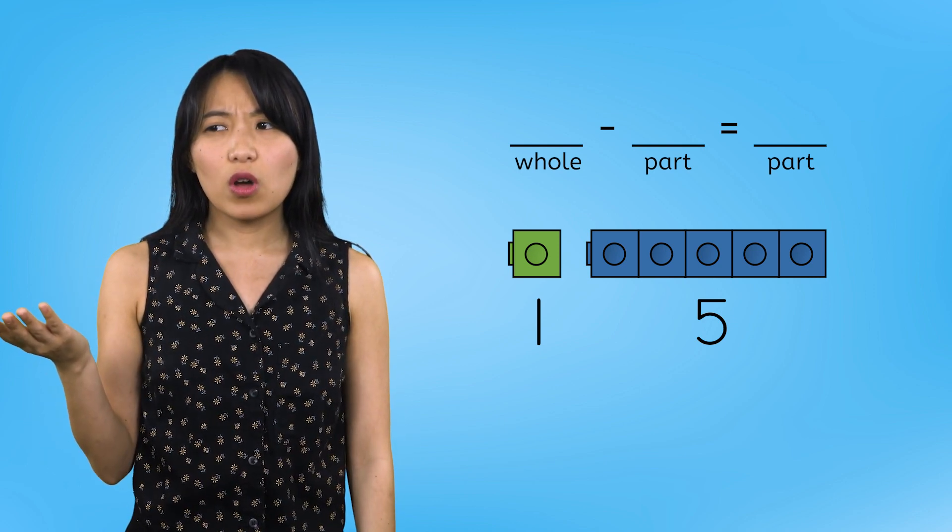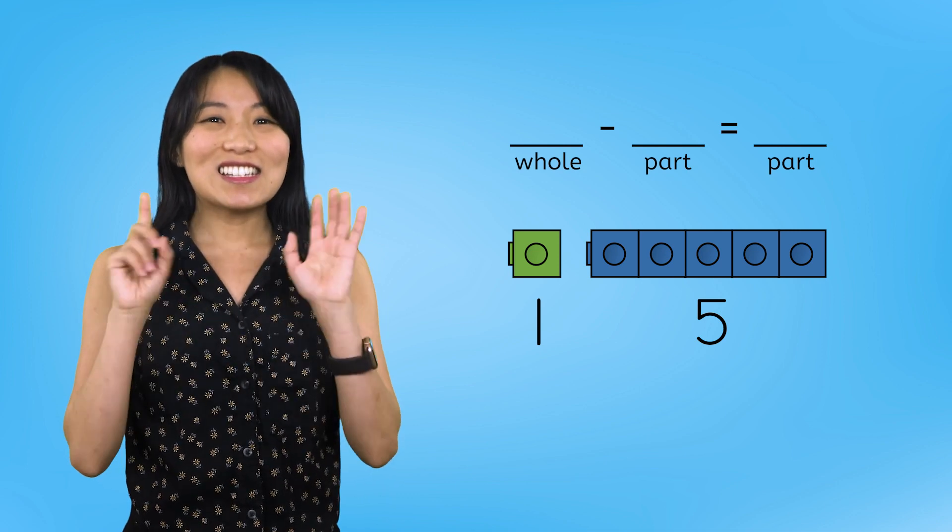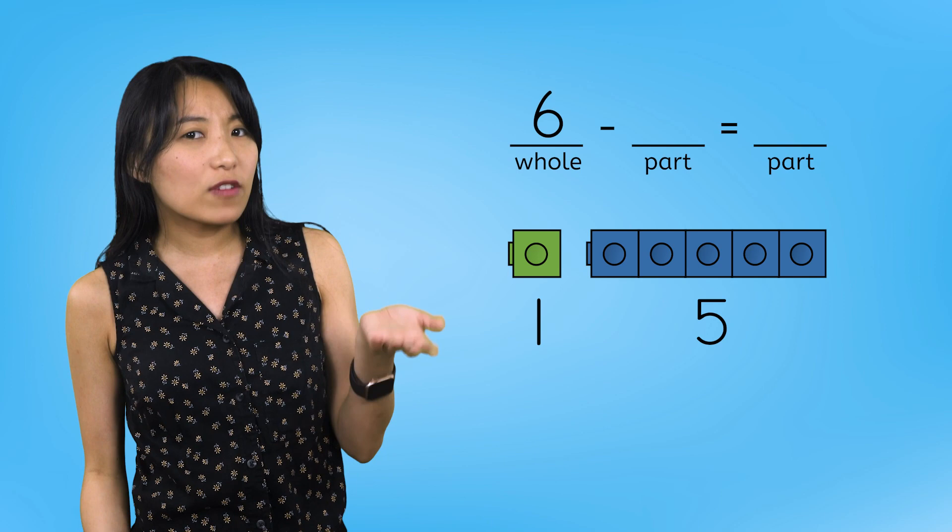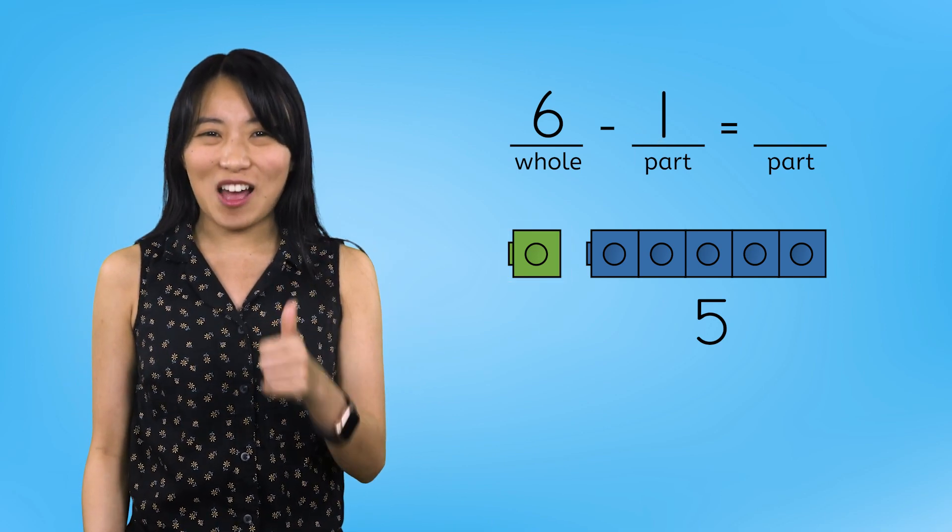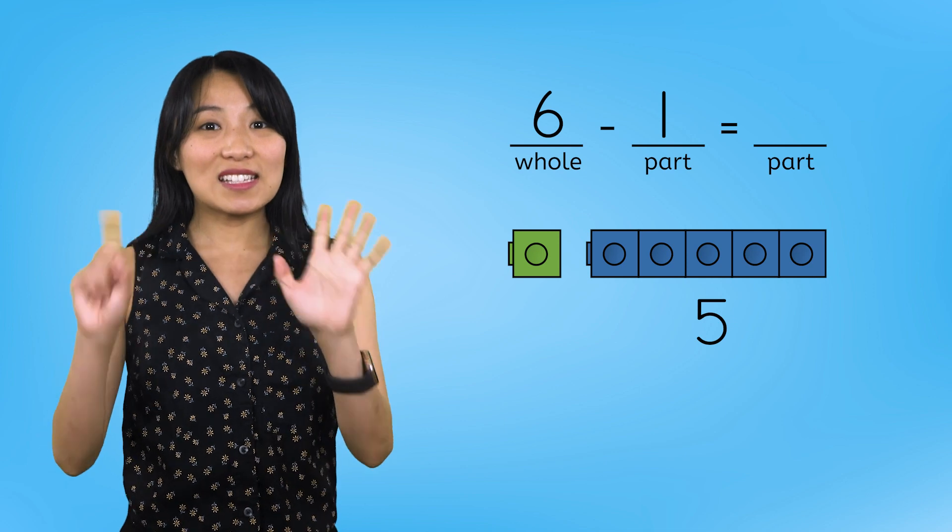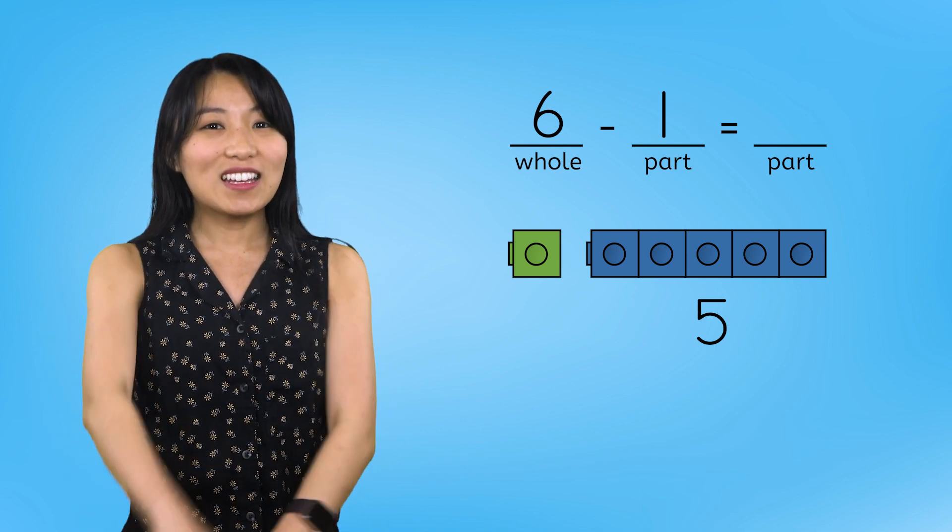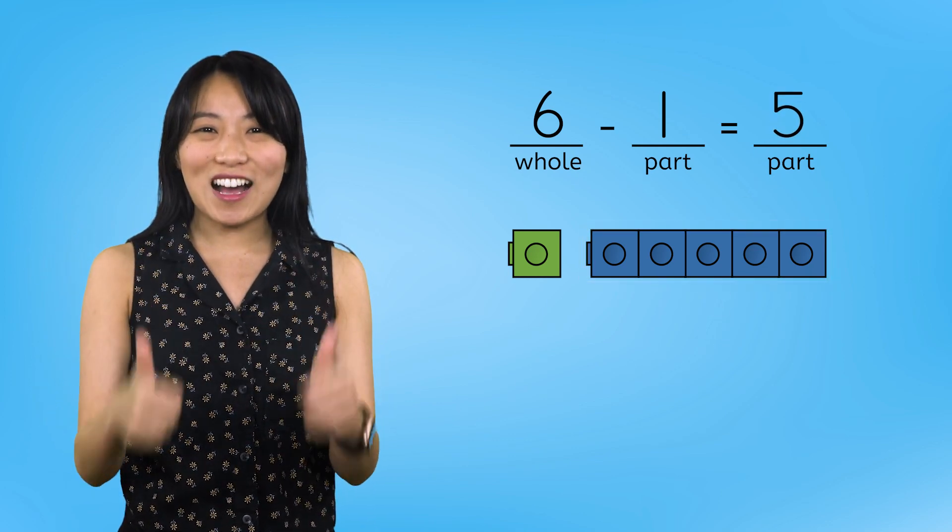So what is our whole? Good. Six is our whole. And which part did we take away from 6? 1. Great job. So 6 minus 1 equals 5. Great job.